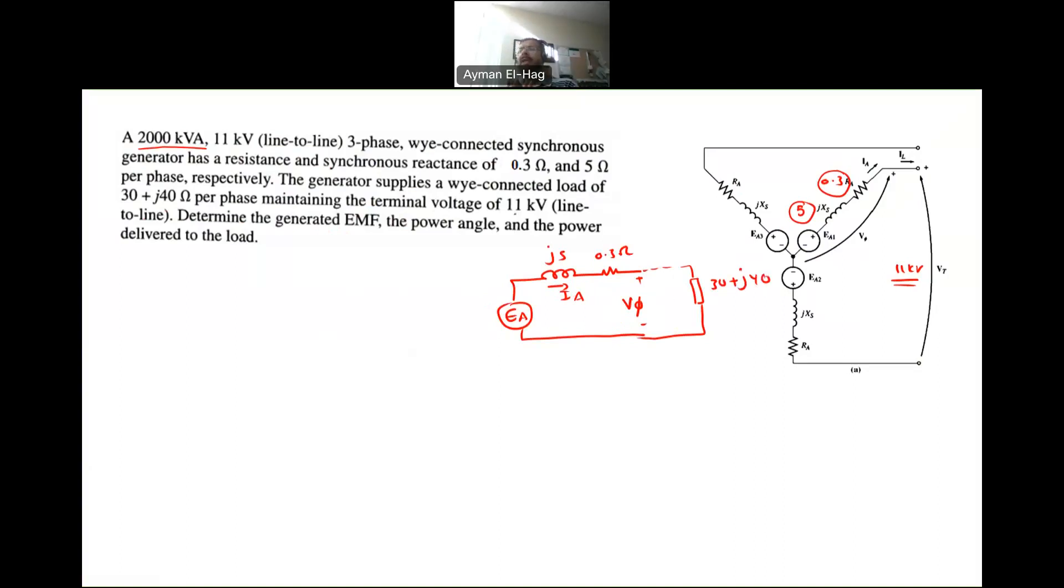The load basically is an inductive load, which is equal to 30 plus J40. So this is everything in a single phase model. As we know, since we work in a balanced system, if the information is given to us as a circuit, like this question, so it's better to draw it as one single phase circuit diagram.